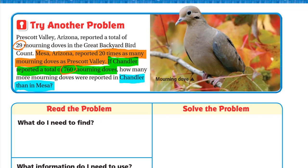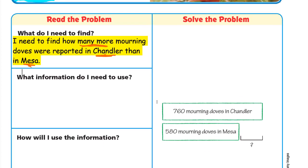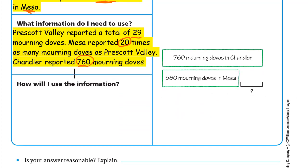Then we compare Mesa's number to Chandler's 760. Let's set up the graphic organizer: What do I need to find? How many more mourning doves in Chandler than in Mesa. What information do I need? Prescott Valley reported 29 mourning doves; Mesa reported 20 times as many as Prescott Valley, so 20 times 29; Chandler reported 760 mourning doves.